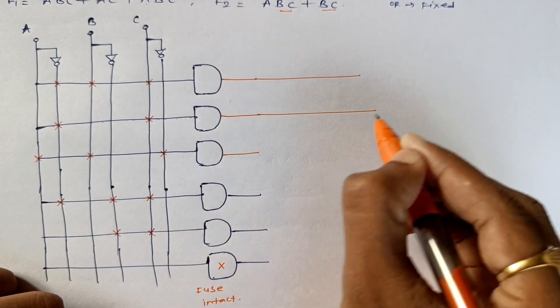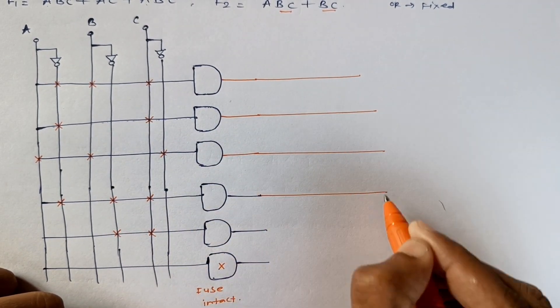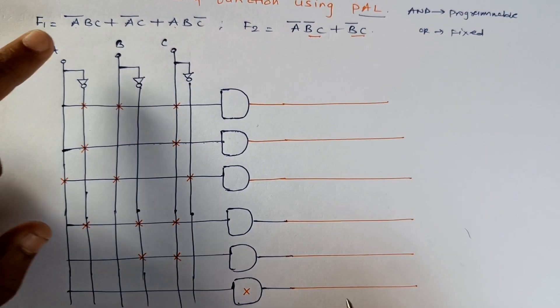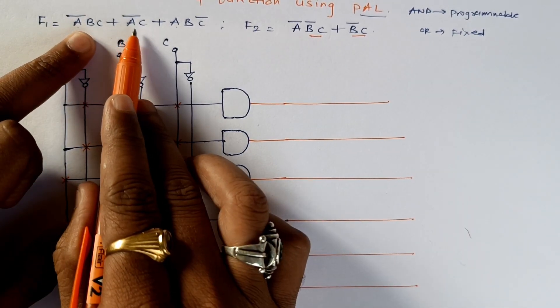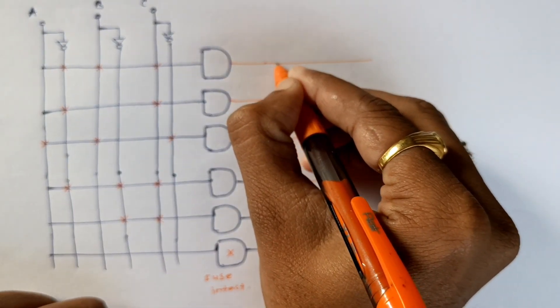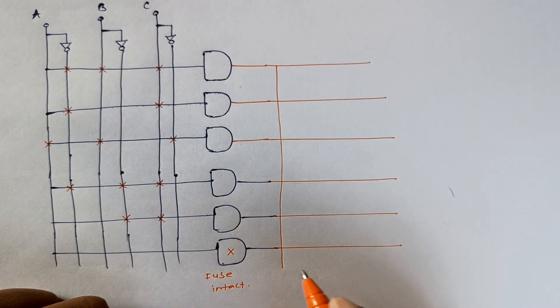Now I have to add all those terms, so I will be adding them. So the first one is equal to A bar B C plus A bar C plus ABC bar. From here we will take a line which is connected to the OR gate.